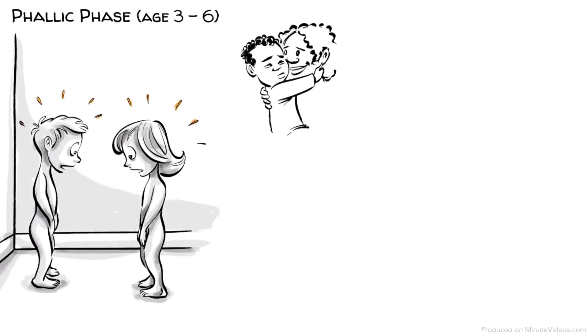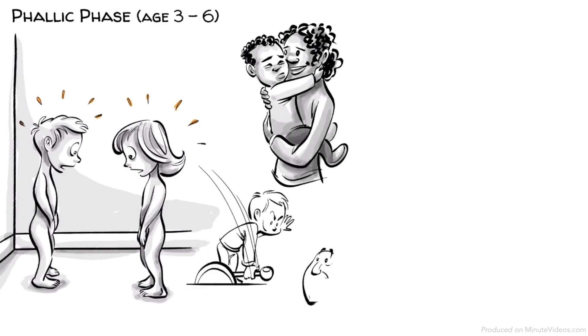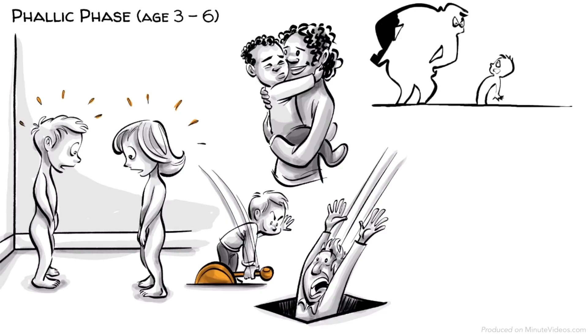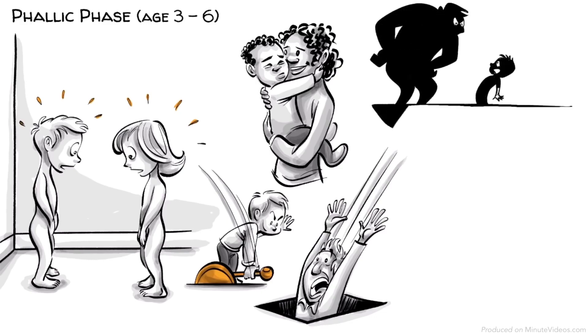The boys conflict in this phase occurs as a rivalry with their father, also called the Oedipus complex. Ernst and Hans desire to possess their mother and fantasize about getting rid of their father. But they know that their father is stronger and fear being punished for their desire. Freud called this castration anxiety.